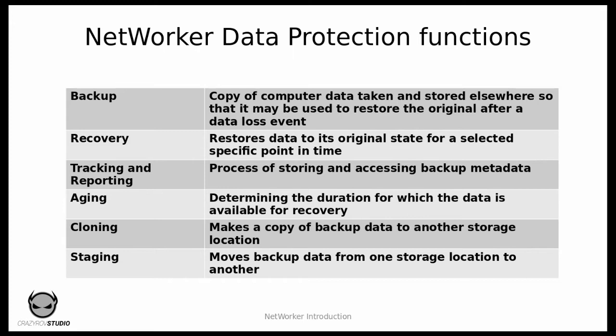Cloning is nothing but making a copy of the backup that was done and storing it in another volume or location. Since a backup is already a copy of the production data — that is the primary copy — when you do a clone of the backup, you would end up having two copies of the production data. This is generally done for disaster recovery, if you want to store the primary backup data in one location and the secondary backup data in a disaster recovery location.